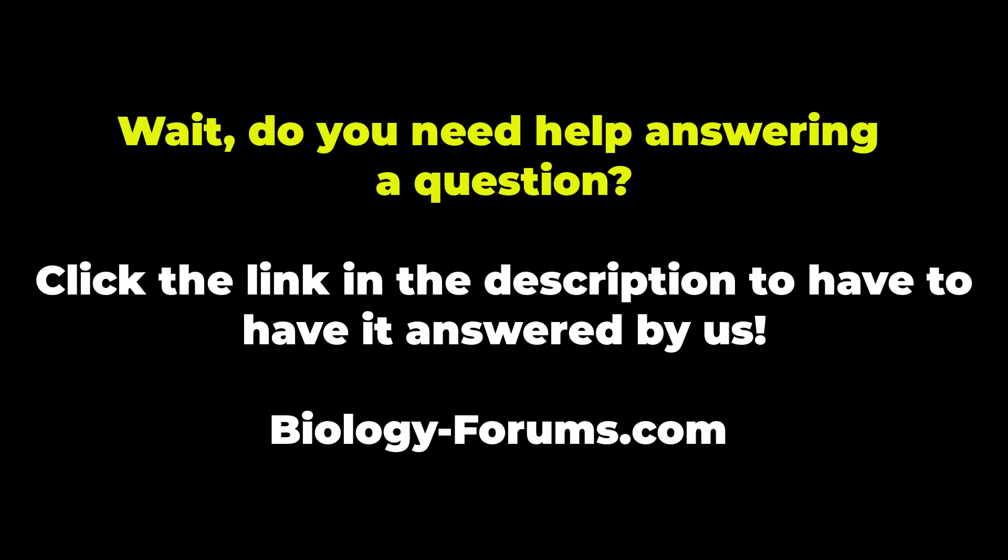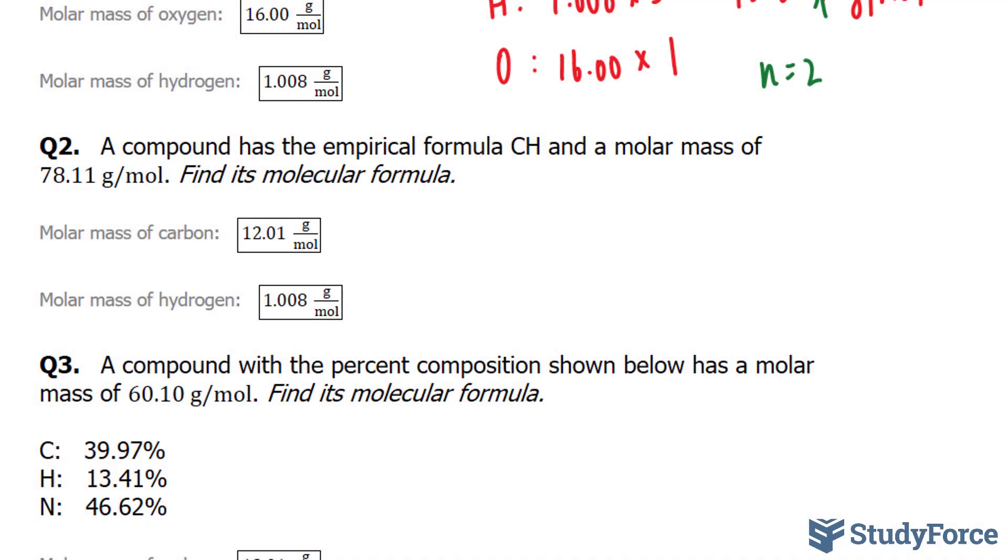In question 2 they ask: a compound has the empirical formula CH and a molar mass of 78.11 grams per mole. Find its molecular formula. So I'm going to give you a moment to figure this out. I suggest that you pause the screen and see if you can come up with an answer, and here's what you should end up with.